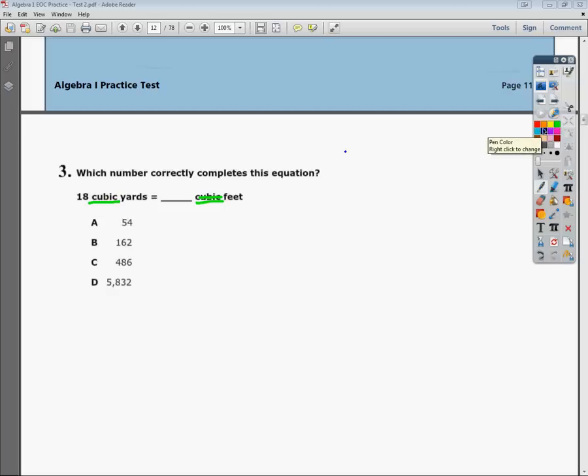So I need to find that the conversion factor between feet and yards would be that one yard is the equivalent of three feet. So I need to first set up 18 yards cubed so I can convert it to cubic feet. I'm going to put this over 1 just for my own edification.